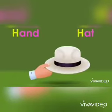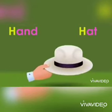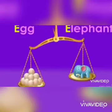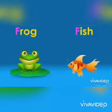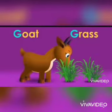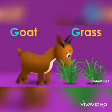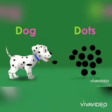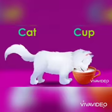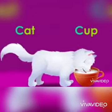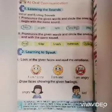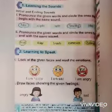Practice words for initial sounds: leaf, lamb, head, elephant, frog, fish, god, grass, dog, birds, cat, cubs.